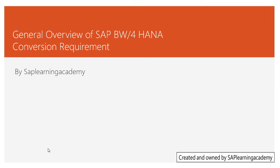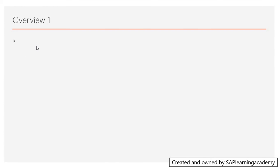Suppose you are trying to convert one of the SAP BW systems like SAP 7.3, 7.4, or 7.5 and not yet converted into SAP BW HANA. During the conversion, you need to have a set of things in place so that the conversion can be done.